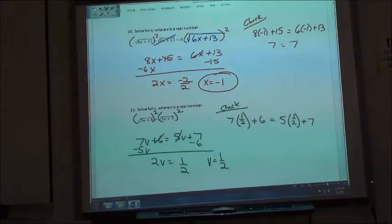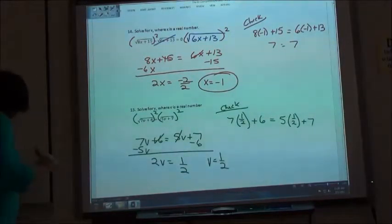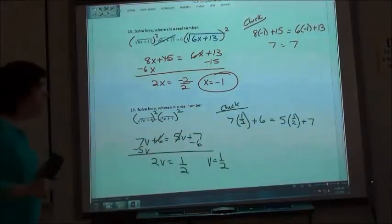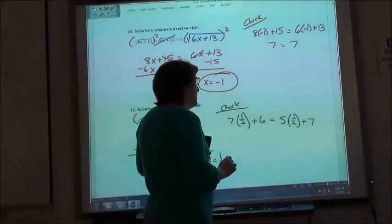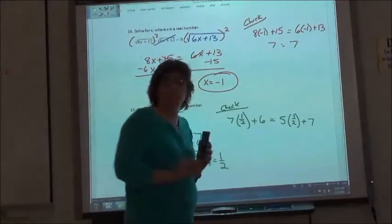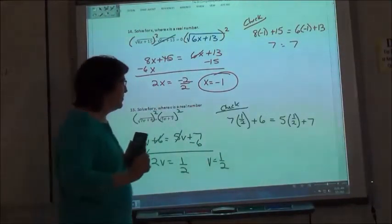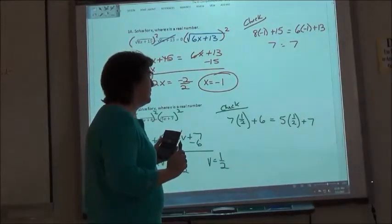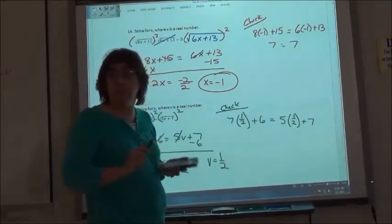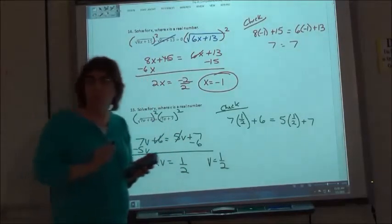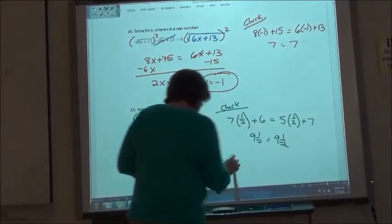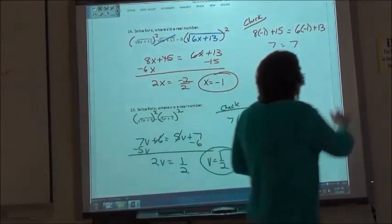So I'm going to grab my calculator and I'm going to check it out. So 7 times 1 half plus 6 gives me... We get 9 and 1 half equals 9 and 1 half. So it does check out. So we're okay. So you want to get used to having...